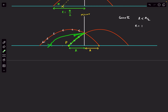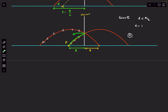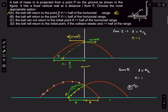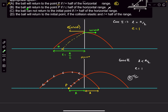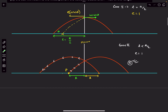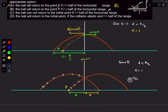As we reduce e, the horizontal velocity decreases and the particle lands closer to P. So for some specific value of e, the particle will land exactly at P. This means the ball can return to P when l < R/2, but it's not guaranteed — it depends on e. Option B says the ball will return if l ≤ R/2, which is wrong because it's not always true; it only can return for a specific e.